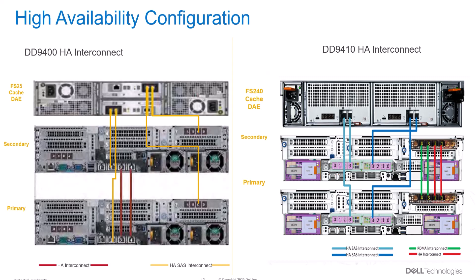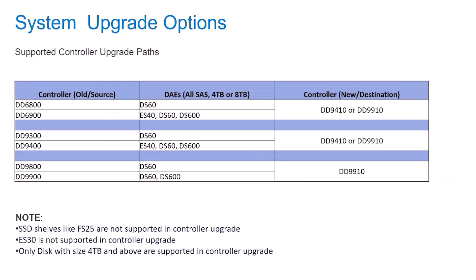Now that we have seen all the components of the next generation platform models, let's go over the supported controller upgrade paths. Customers with older or previous generation platforms can upgrade to new models by replacing the head unit. The existing disk array enclosures supported in the newer models are ES40, DS60, and DS600. Note that SSD shelves like FS25 are not supported in a controller upgrade, nor is enclosure ES30. Only disks with a size of 4 TB and above are supported for the controller upgrade.